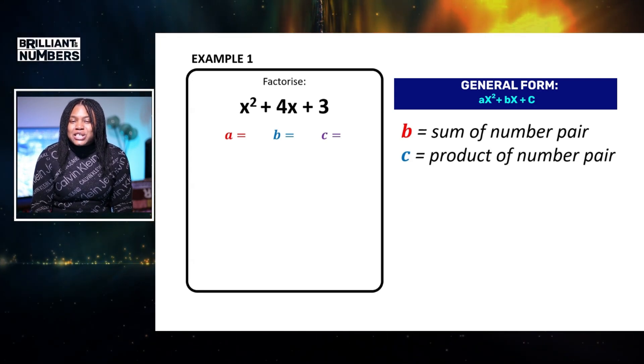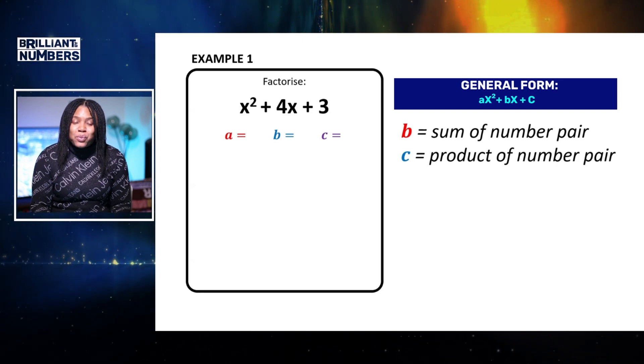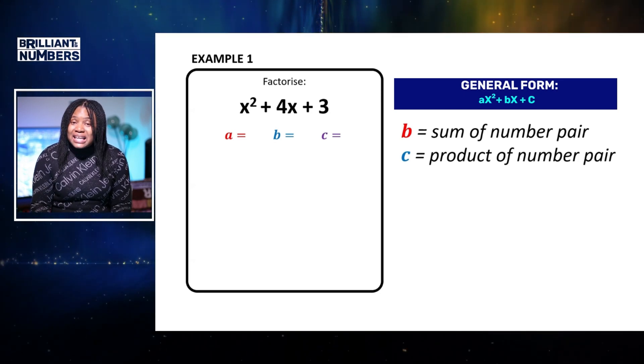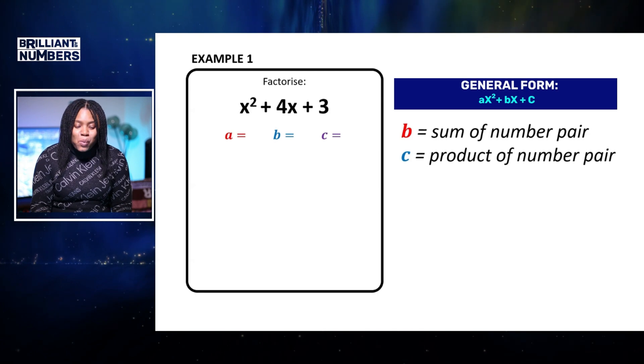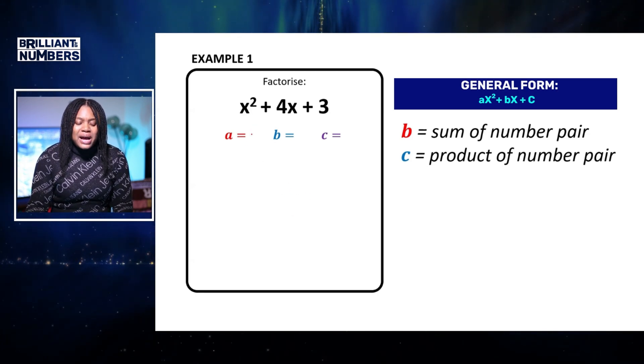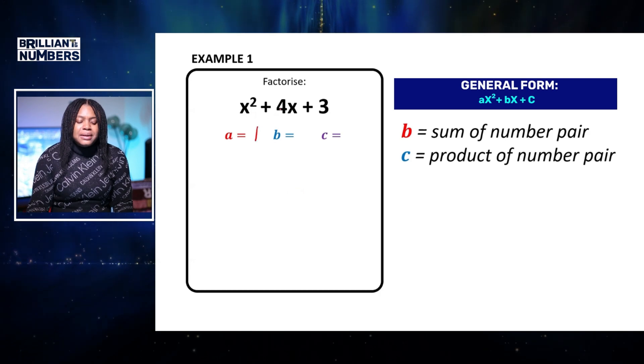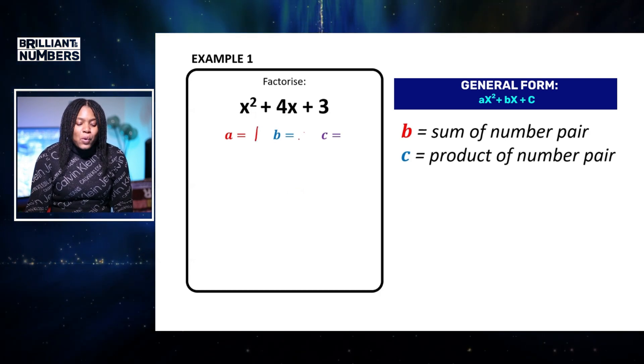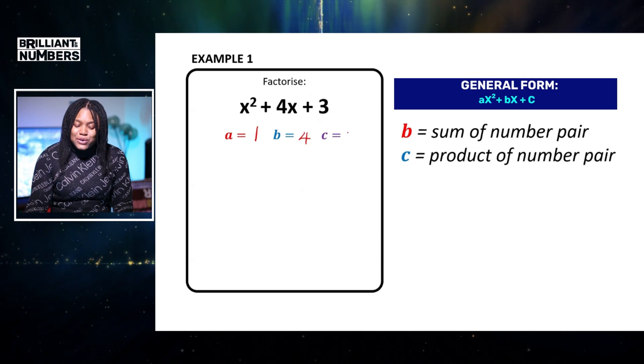That's because the coefficient is equal to 1. Because there's just 1 x squared, there's no need to write a 1 before, because it's clear to the eye that there's only 1 x squared. So I'm going to go ahead and write that a is equal to 1, b is equal to 4, and c is equal to 3.